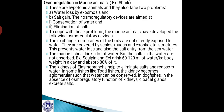Marine fishes drink a lot of water but the salts in the water are not absorbed. For example, sculpin and eel drink 60 to 120 ml of water per kg body weight per day and absorb 80% of it. That means a large amount of salt is absorbed, and the kidneys help to eliminate salts and reabsorb water. In some fishes like toad fishes, the kidney lacks glomeruli so that water can be conserved, and in dog fishes cloacal glands excrete salts to achieve salt balance.